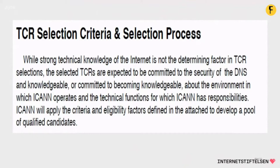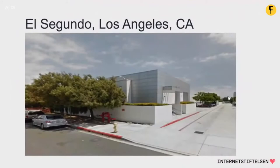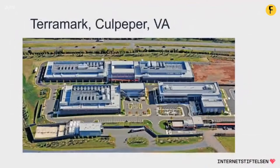There are two data centers. One is in El Segundo, Los Angeles, California, and the other one is in Terramark, Culpeper, Virginia — one on the East Coast and one on the West Coast. I belong to the team that works with the East Coast, Culpeper. There are seven crypto officers for each site. We also have a backup team with persons ready to step in if someone wants to step down. There is a lot of focus on physical security. We have different tiers, and I will get back to that and explain what they mean.